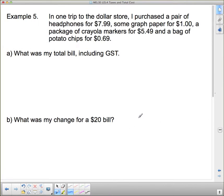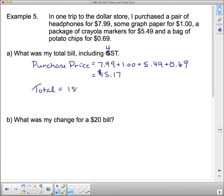In one trip to the dollar store, I purchased a pair of headphones for $7.99, some graph paper for $1, a package of Crayola markers for $5.49, and a bag of potato chips for $0.69. What was my total bill, including HST? We've got to add all of this up first. So I've got $15.17 for the purchase price. Now I need the total with tax. I take that $15.17 and times it by 1.13 to get my total. My total is $17.14.